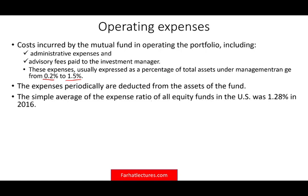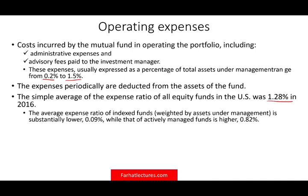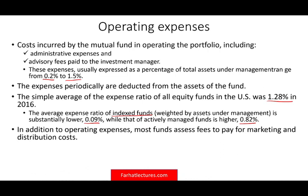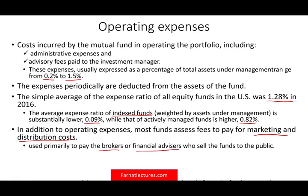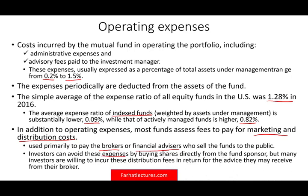The simple average expense ratio of all equity funds in the U.S. was 1.82% in 2016. The average expense differs between fund types: for an index fund — which follows a specific index and is passive — it's as low as 0.09%, while an active fund could range around 0.82%. Active is more expensive because index funds don't require research, whereas active funds involve ongoing research, buying, and selling. In addition to operating expenses, most funds assess a fee for marketing and distribution, primarily to pay the brokers or financial advisors who sell the funds. Investors can avoid these expenses by buying shares directly from the fund sponsor.